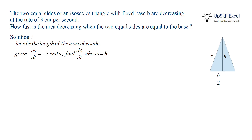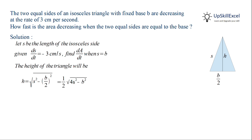Observing the triangle, we can apply the Pythagoras theorem to find the height of the triangle, which will be equal to the square root of s squared minus (b/2) whole squared. We can simplify this to one half of the square root of 4s squared minus b squared.